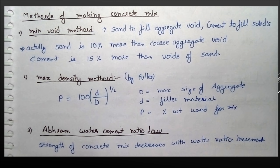The third method is Abraham water cement ratio law, which means that as we increase the water ratio, the concrete strength decreases.